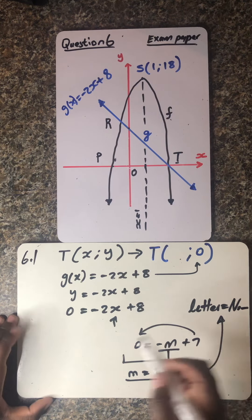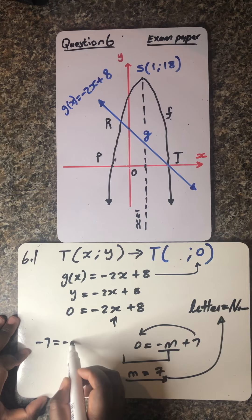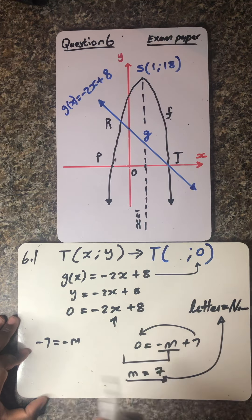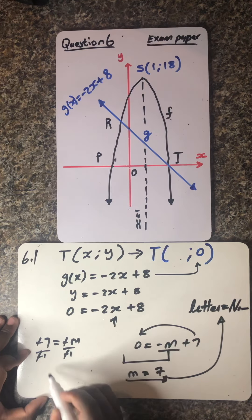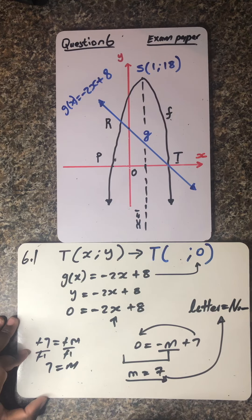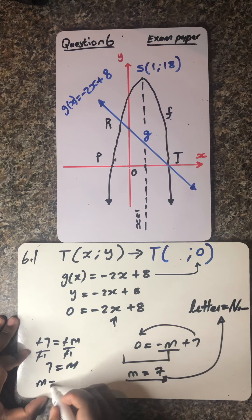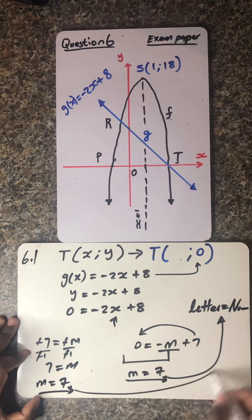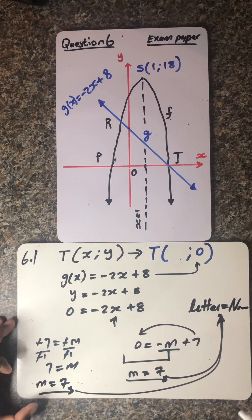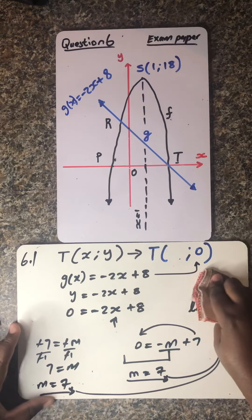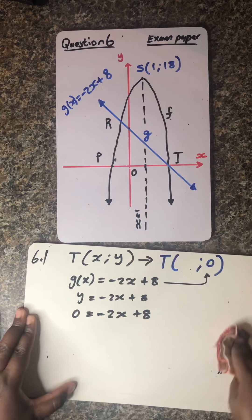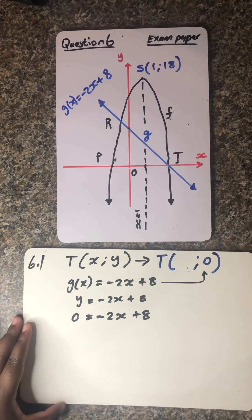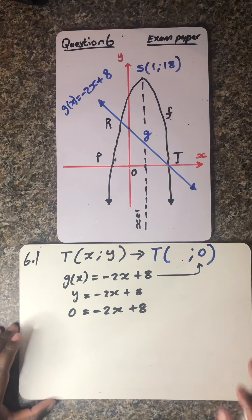But otherwise, if you want to move the number, then it means it becomes minus 7, which is equals to negative m. So from there, you obviously need to divide by negative 1, so that negative cancels, then you have 7 which is equals to m, then you're still going to rewrite them in that format. That's why I'm saying ladies and gentlemen, it's not at all times a must that you only move the numbers. You can still move the letters to the other side.